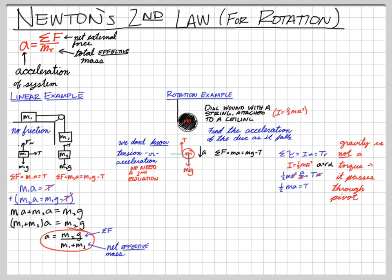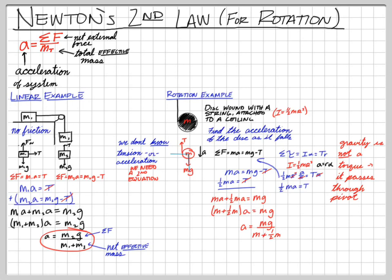That equation and our first equation go together. MA equals MG minus T, and one-half MA equals tension. Adding them: tensions cancel, giving MA + one-half MA = MG. Factoring out A: (M + one-half M) times acceleration equals MG. Solving: A = MG divided by (M + one-half M). MG is the net external force on the system.